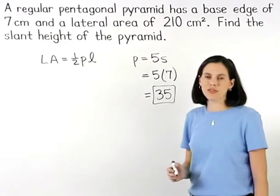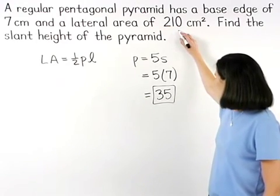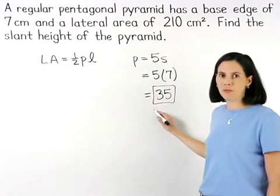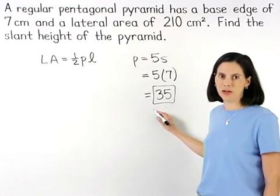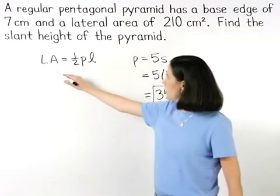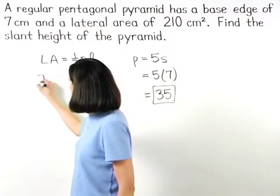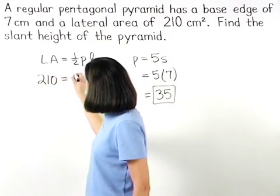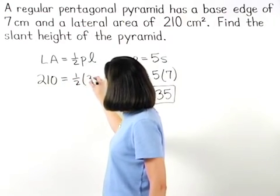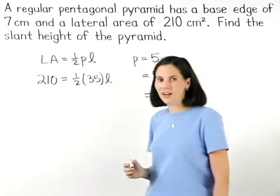Now since the lateral area is 210 and the perimeter of the base is 35, we can plug this information into the formula to get 210 equals one-half times 35 times L.